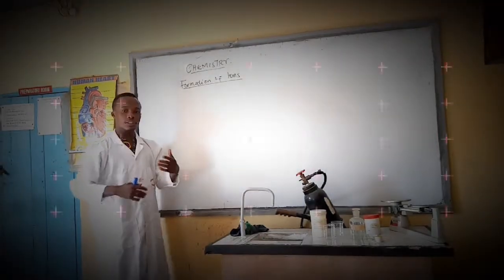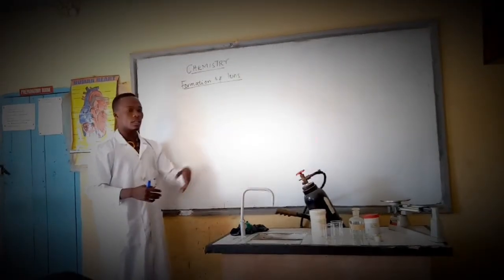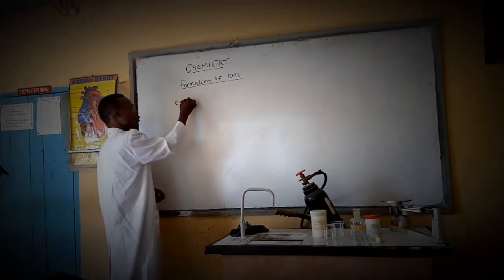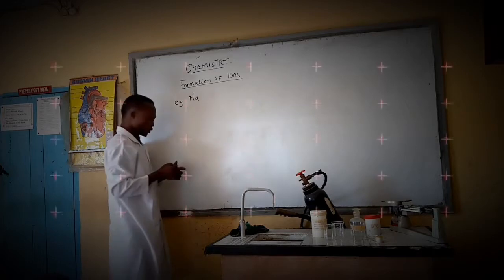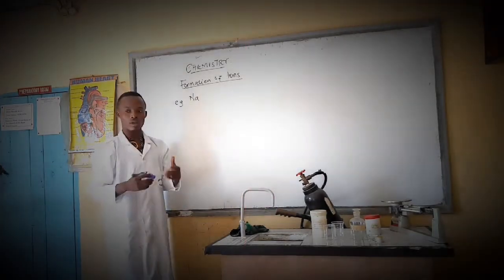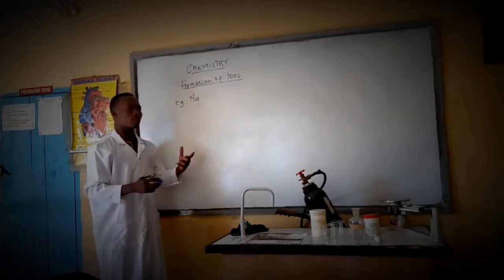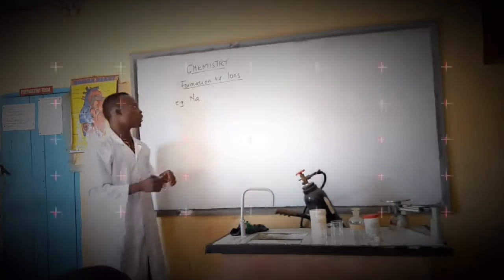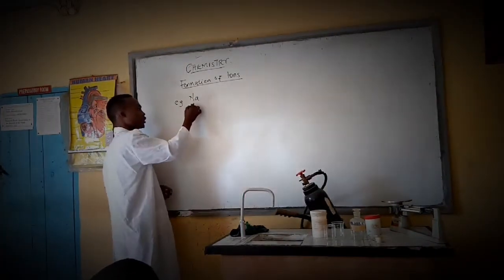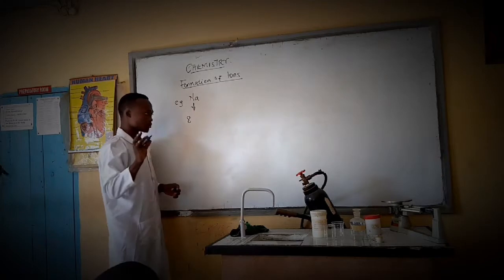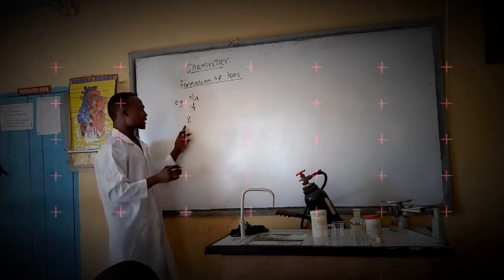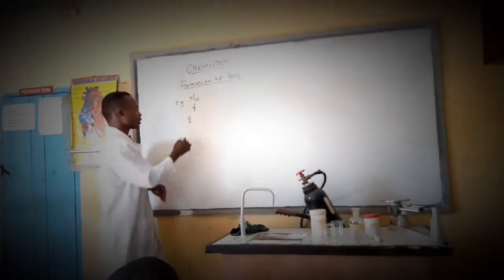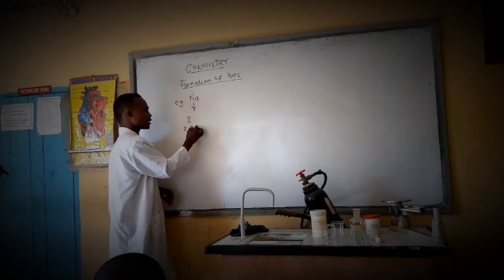If an element loses or gains an electron, it turns into an ion. For example, take sodium — sodium is a metal. Sodium has 11 electrons. If you split this into electron shells, that gives us 2, 8, 1.